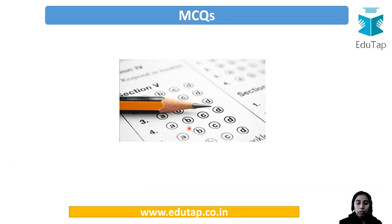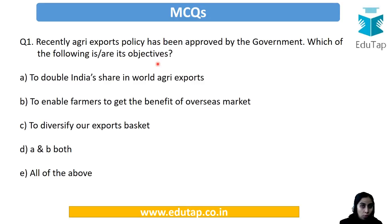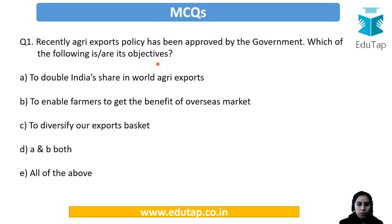We are done with the news. Now let's see the MCQs which are based on these news items — try to solve them and recall the answer; mention it below in the comment section. The first question: Recently the AgriExports Policy has been approved by the government. Which of the following are its objectives? Option A: To double India's share in world agri-exports. Option B: To enable farmers to get the benefit of overseas markets. Option C: To diversify our exports basket. The answer is option E — all of the above.